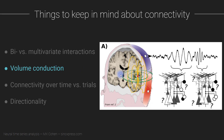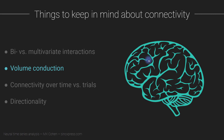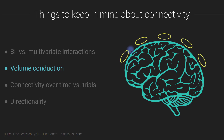Volume conduction is a bit of a double-edged sword. If volume conduction didn't exist — if the brain were encased in a rubber sheath that was totally electrically isolated — it would be impossible to do non-invasive electrophysiology. So we need volume conduction and should be grateful that the universe has it. On the other hand, volume conduction is a potential source of artifact and a definite concern for connectivity analyses.